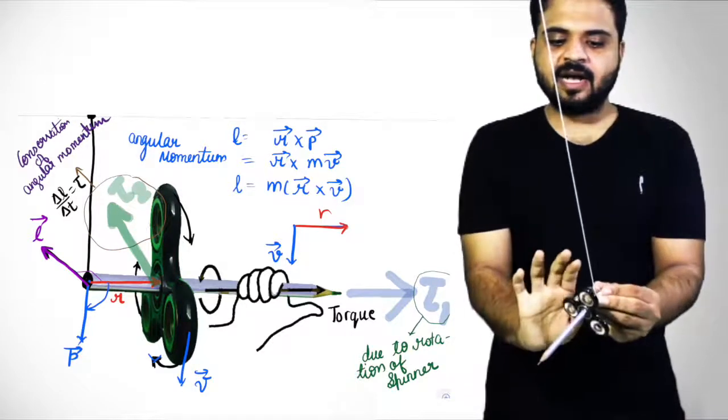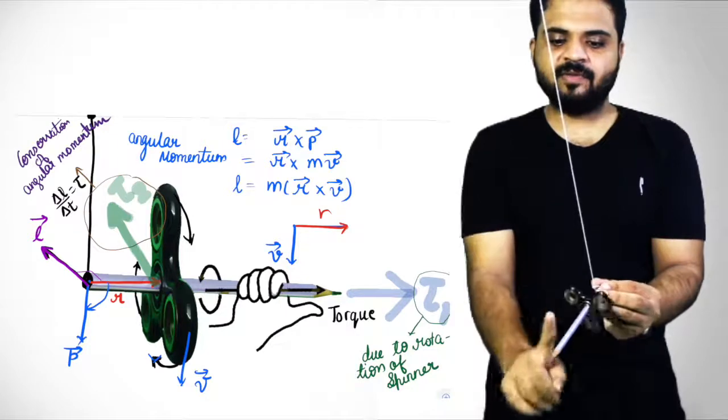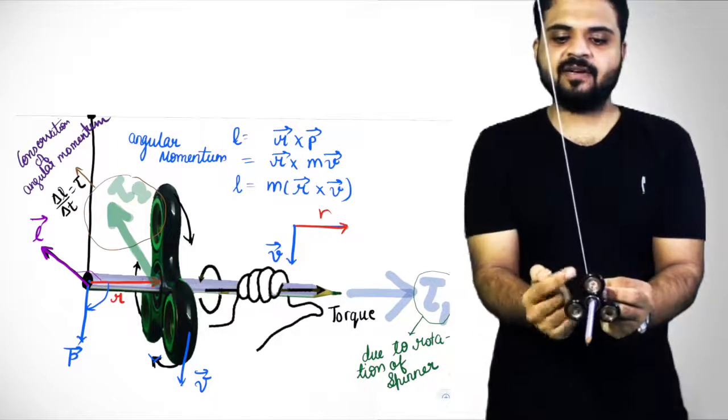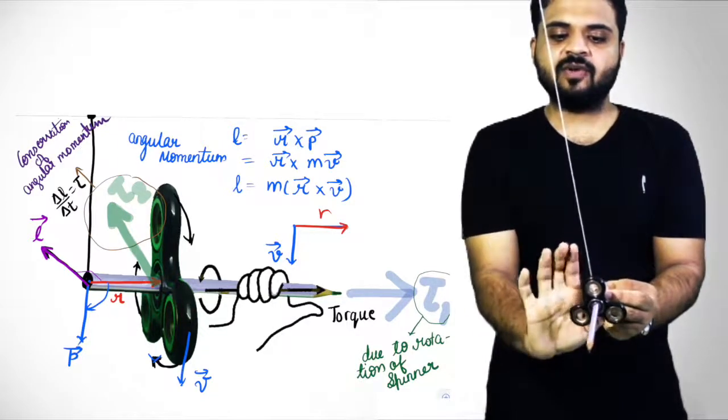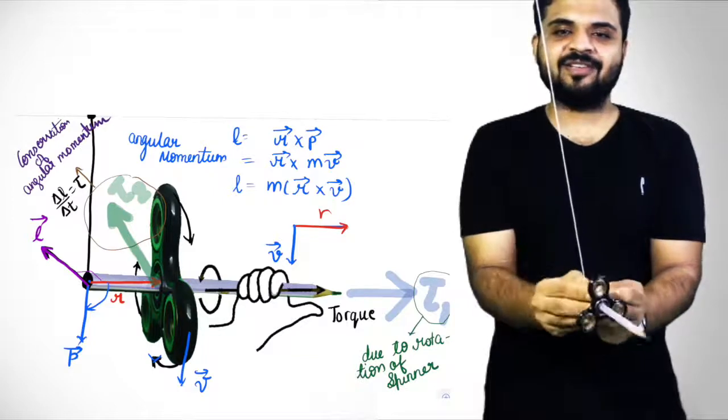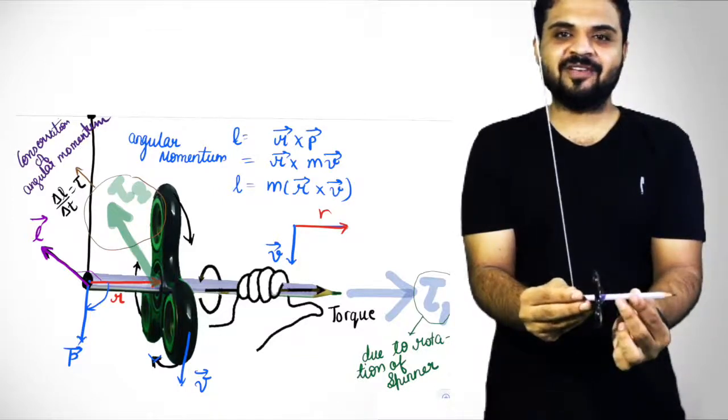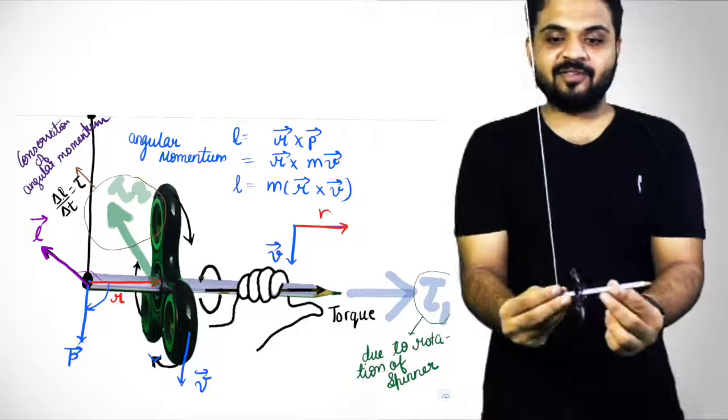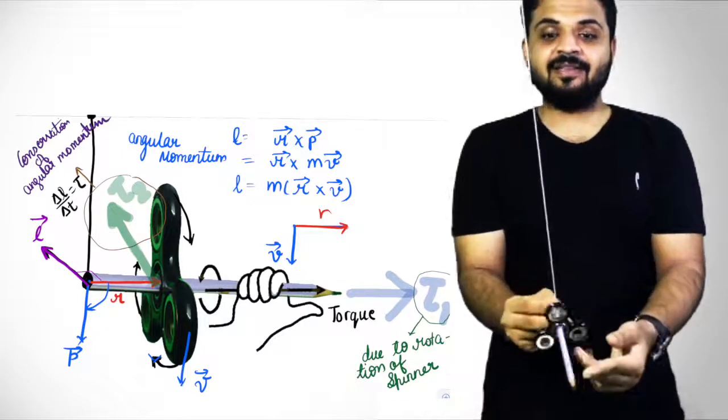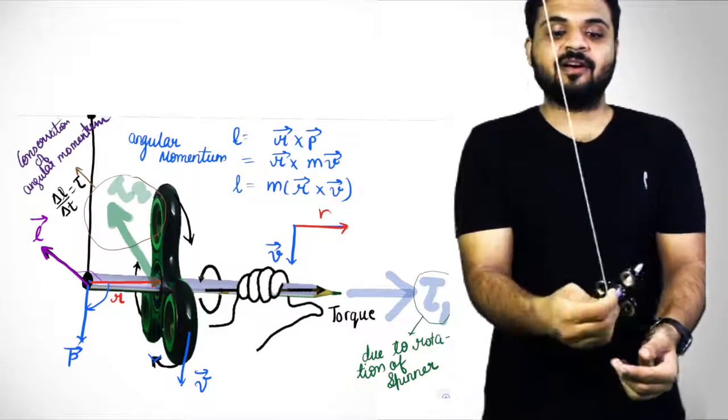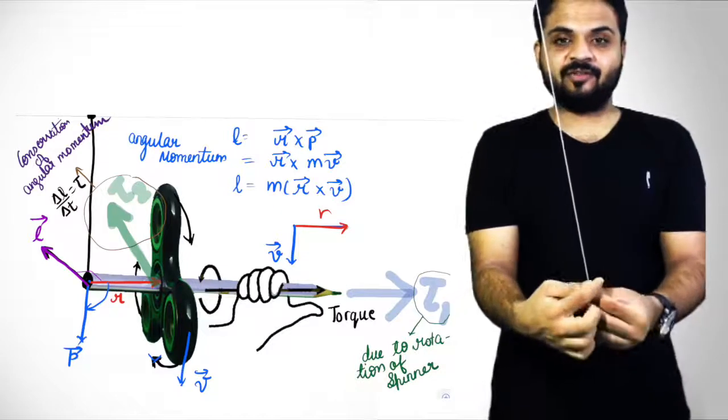If velocity is this, putting this vector over here, I'll get r cross p. This was our r vector, this was my velocity vector. So r cross p I'll get this motion. This motion will be continuous, and this motion after the rotation is a result of the angular momentum.